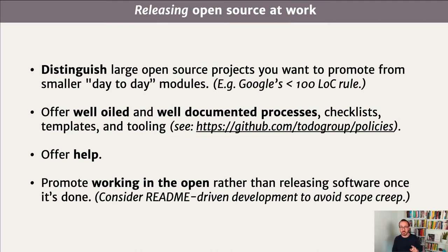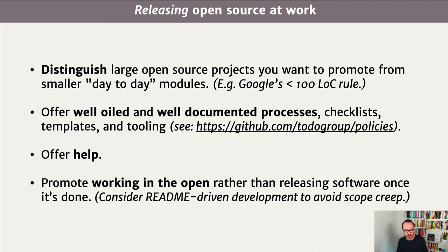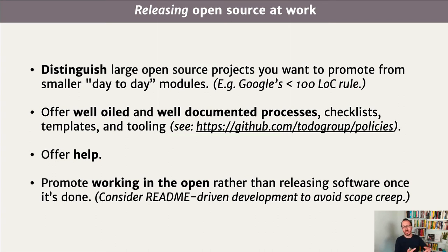Have well-oiled and well-documented processes, checklists, templates, and tooling to do all of this. There are great examples on the TODO Group repository and policies repository. If you have an OSPO, make the OSPO really help new projects figure out how to work in the open — because that's different. I would strongly advise promoting working in the open from the get-go whenever possible, because that makes the whole process way smoother, a lot less risky, and easier to build a community on top of. The only downside is you lose the opportunity for a big release bang, but we should stop considering open-source projects as products to market unless it is really at the core of your business.